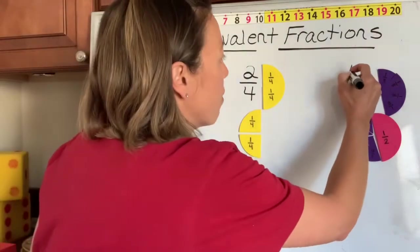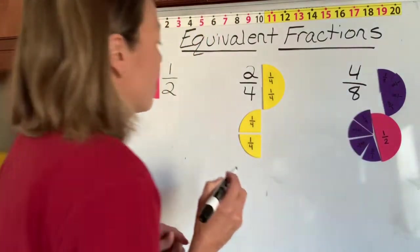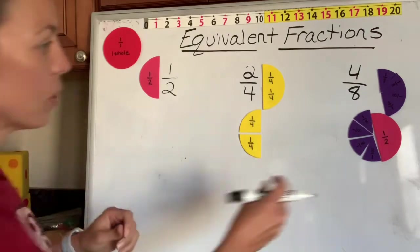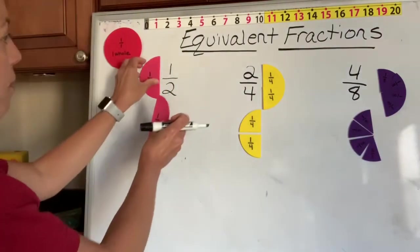So let's write our fraction up here where we have four eighths as being equal to one half.